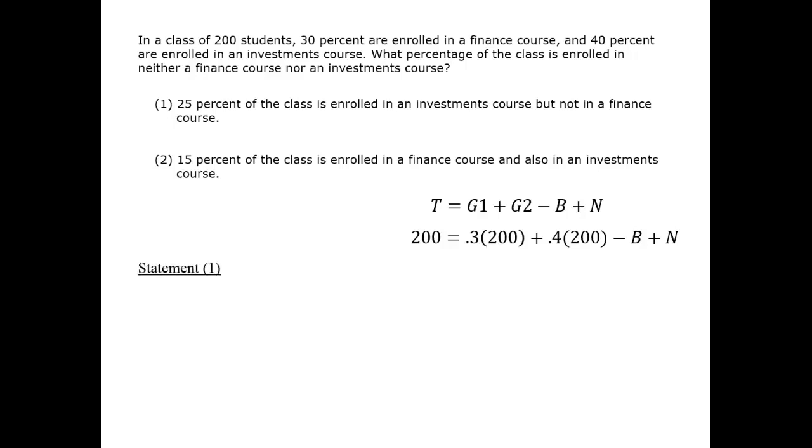Statement 1 doesn't give us exactly what we were expecting because it's not defining the number that are in both classes, but we can analyze by cases to understand what we're being told. If 40% are in investments from above and 25% are in investments but not finance, then the difference, which happens to be 15%, is enrolled in investments and in finance. So we have obtained the value of both as given.